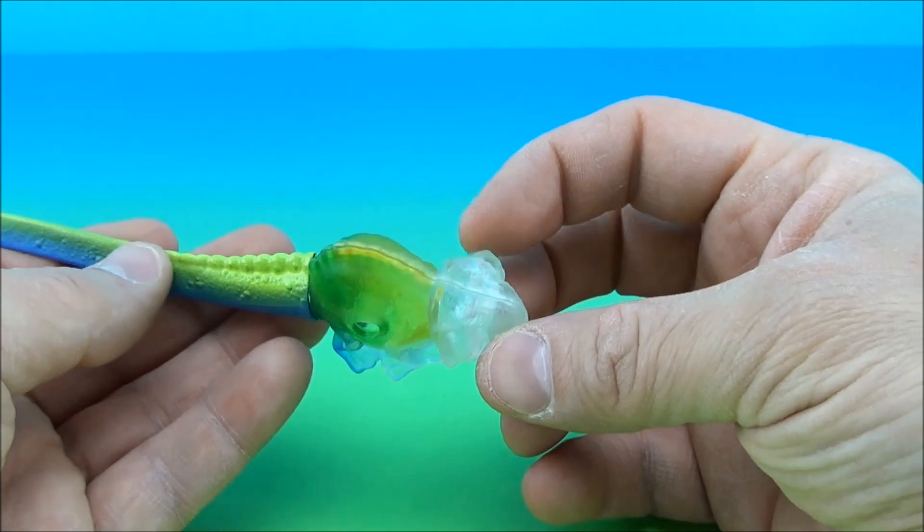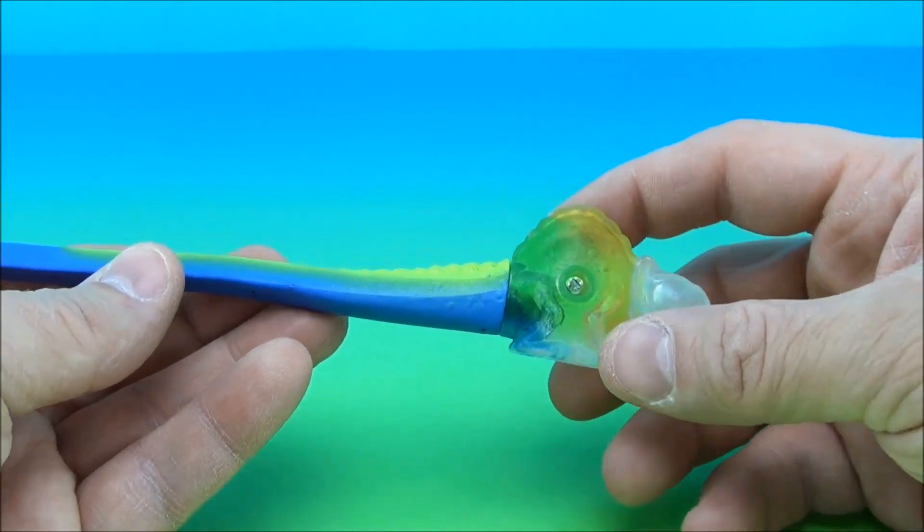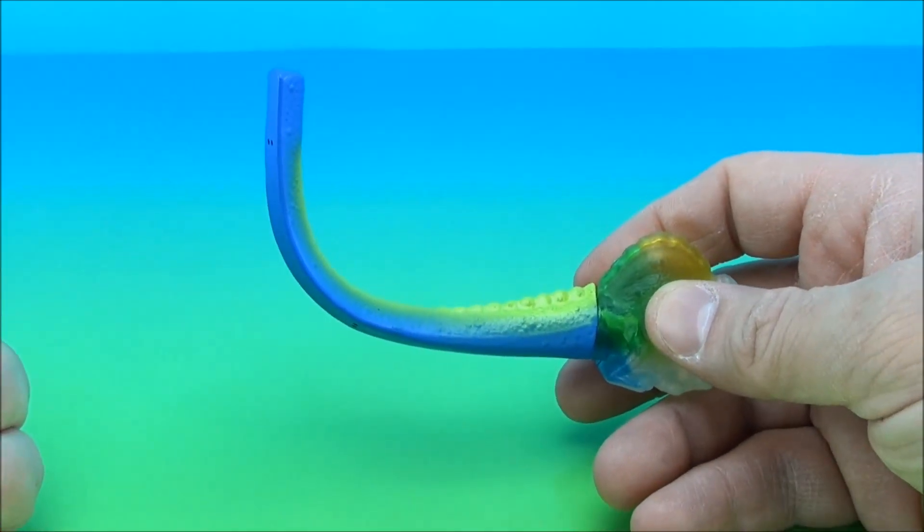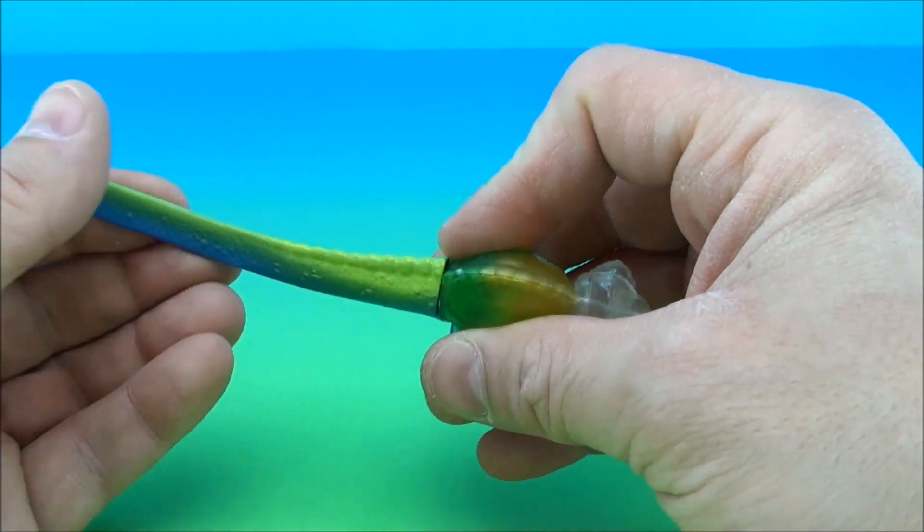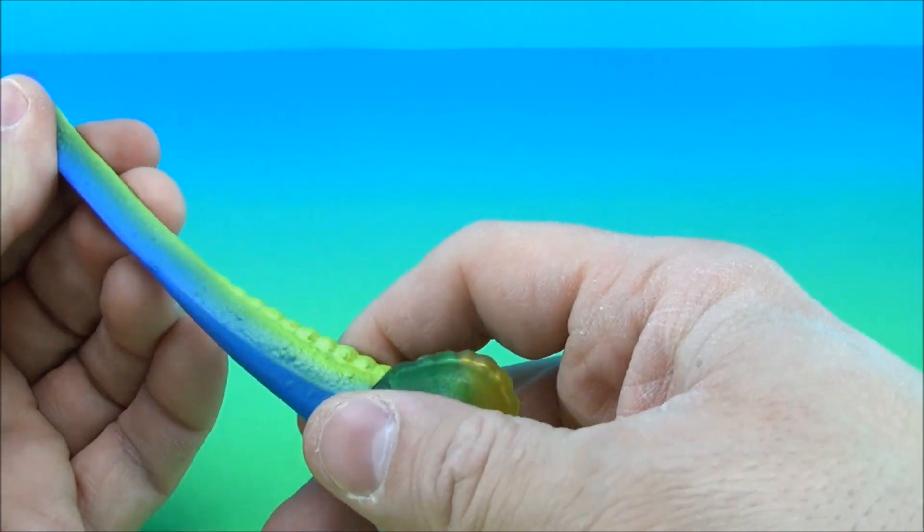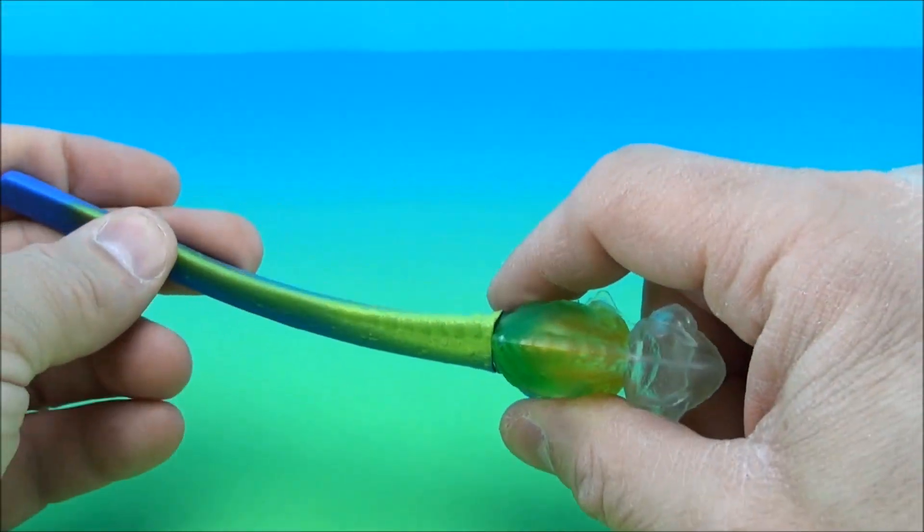This guy's clear. He's got little buggy eyes here. This is really neat because he's clear and then he fades into some really cool-looking colors.